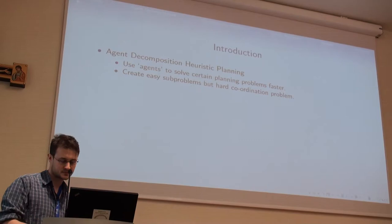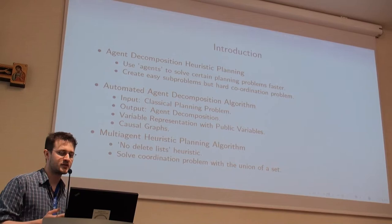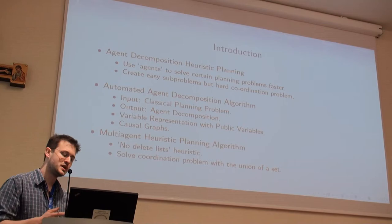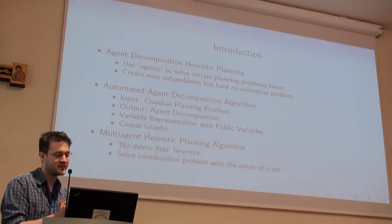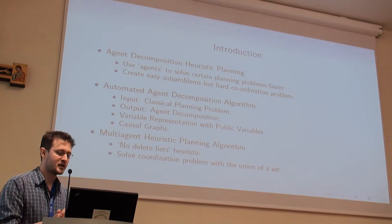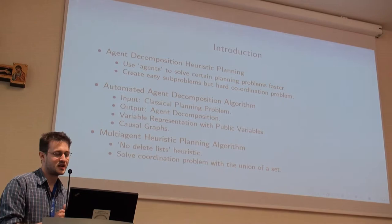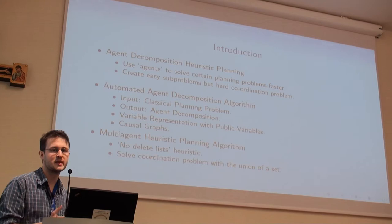What we present is, first of all, an agent decomposition algorithm. The input is a classical planning problem and it outputs an agent decomposition — in the cases where we expect to find one, it outputs one. The second thing is a heuristic planning algorithm based on an FF planner that exploits the decomposition. The hypothesis is that if we can find such decompositions and modify FF to exploit them, we can solve planning problems much faster than FF does.